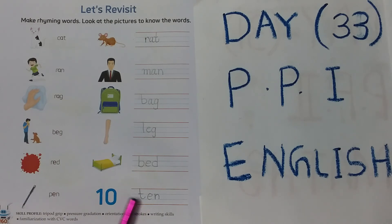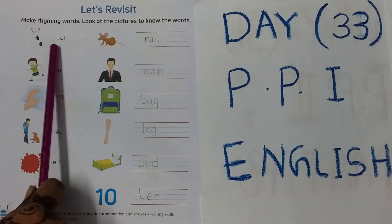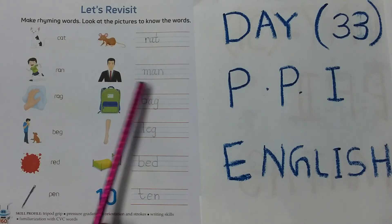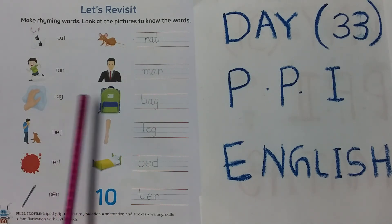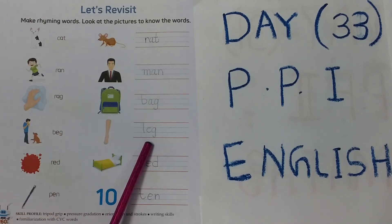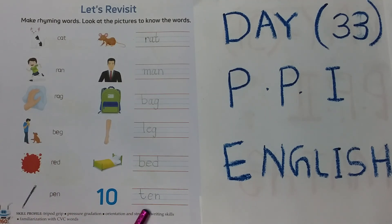So let's quickly recapitulate, children. C-A-T Cat, R-A-T Rat, R-A-N Ran, M-A-N Man, R-A-G Rag, B-A-G Bag, B-E-G Beg, L-E-G Leg, R-E-D Red, B-E-D Bed, P-E-N Pen, T-E-N Ten. What have we learnt today, children? Today we have learnt rhyming words. Hope you understand. Thank you.